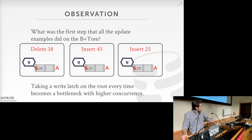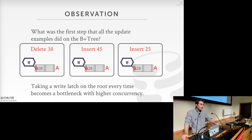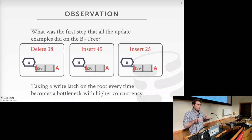We ended last time with the observation that the first step in our latching algorithm was to always take a write latch on the root node of the tree every single time. But as you scale up to more threads, this becomes a performance bottleneck because the write latch is exclusive — no other threads can acquire a latch while the root node is write-latched, so the whole tree is locked up.